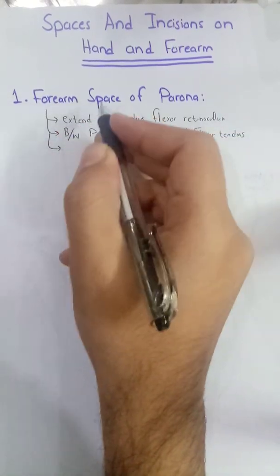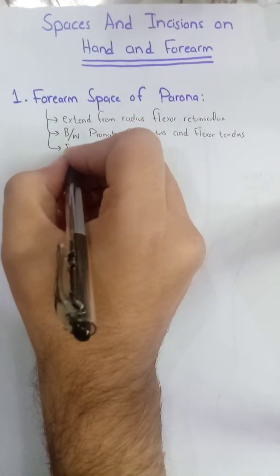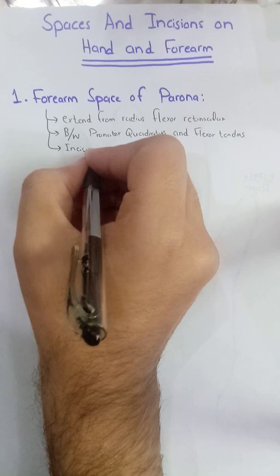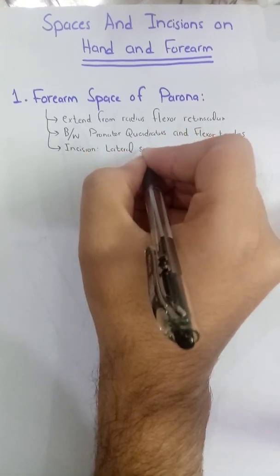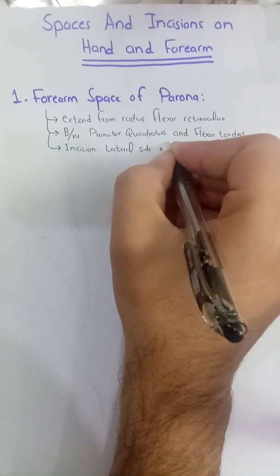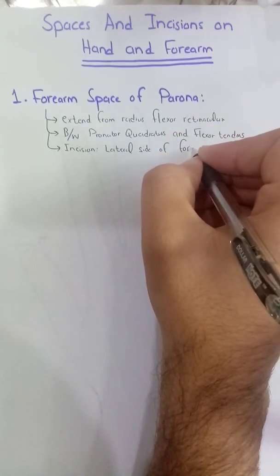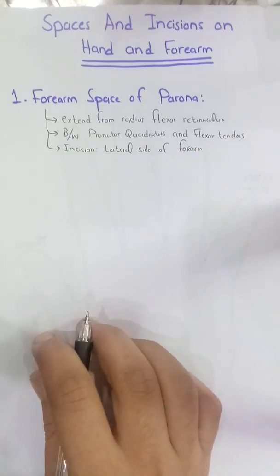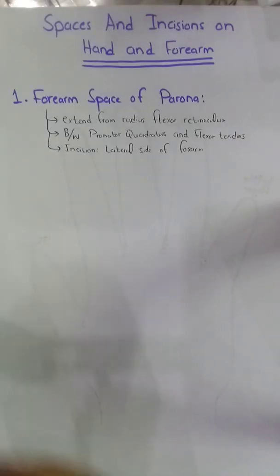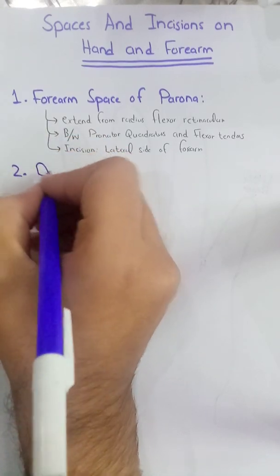The incision for this space will be on the lateral side of the forearm. Now we will move toward the second topic, which is the dorsal spaces of the hand.